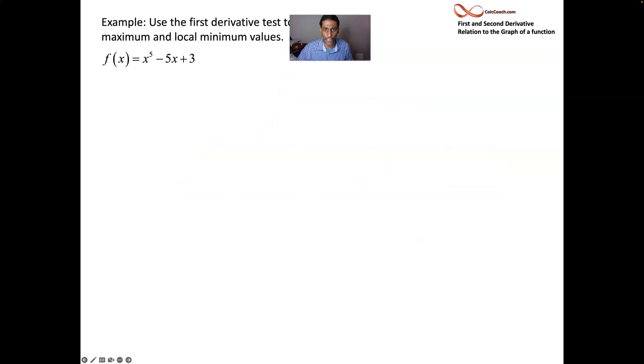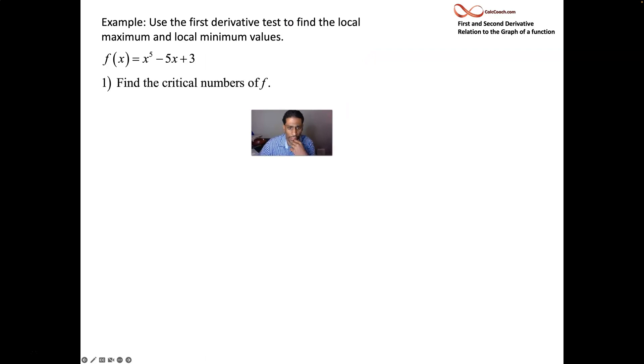Here's an example. We have the function f of x is equal to x to the fifth minus 5x cubed, I'm sorry, minus 5x plus 3. Our job: take the derivative, find the critical numbers. We'll take the derivative, set it equal to zero.